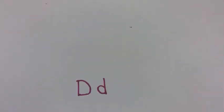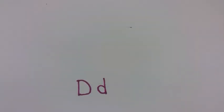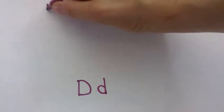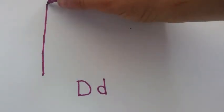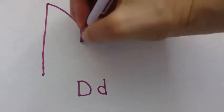Next we're going to learn how to write the letter D. First we're going to learn how to write the uppercase D and then the lowercase D. The uppercase D is made of a line and a curve. Let's try the uppercase D now. We're going to draw a straight line all the way down, come back to the top of our line and make a curve going towards the left.